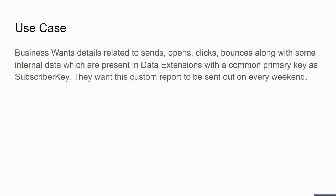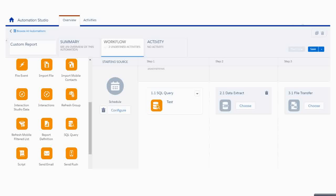For small datasets you can store results in a Data Extension and export them. But for a large dataset in a real business use case — for example, a client wants details on sends, opens, clicks, and bounces joined on subscriber key, sent out every weekend — you would use Automation Studio. You set up a Query Activity to run your Data View query and store results in a Data Extension.